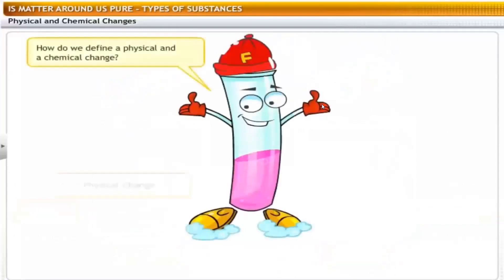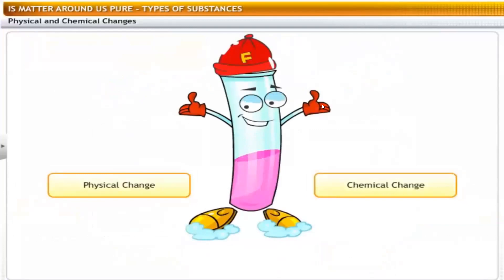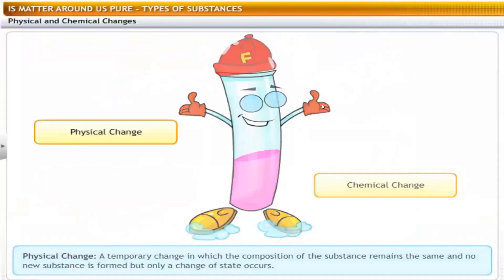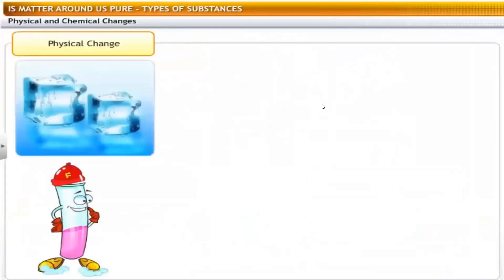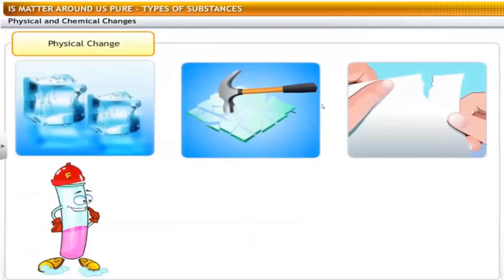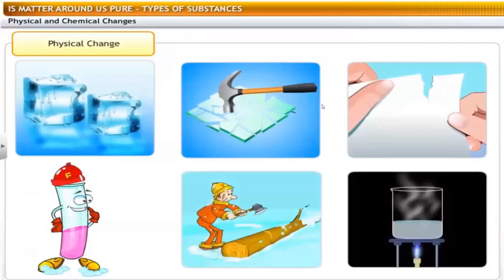How do we define a physical and a chemical change? After observing the experiment, we can define a physical change as a temporary change in which the composition of the substance remains the same and no new substance is formed, but only a change of state occurs. Melting of ice, breaking of glass, tearing of paper, cutting of wood and changing of water to water vapor are examples of physical change.